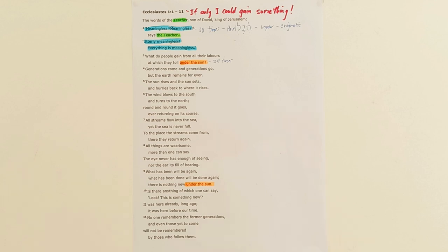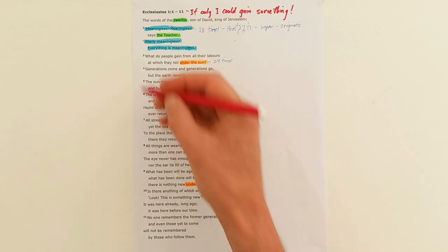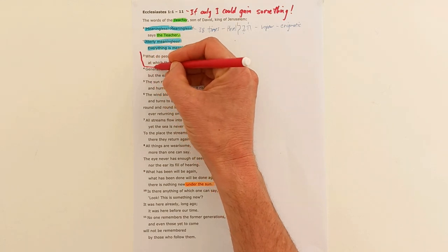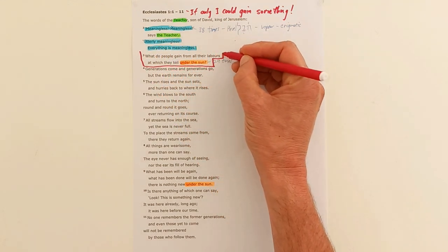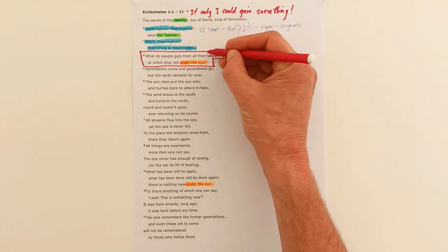By the time we get to the end, chapter 12 in Ecclesiastes, he's going to say here's the conclusion: Fear God. That's how you make sense of life under the sun. But in this opening passage, God is absent. God isn't mentioned in these opening eleven verses.